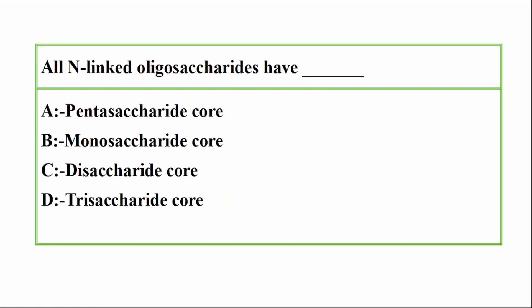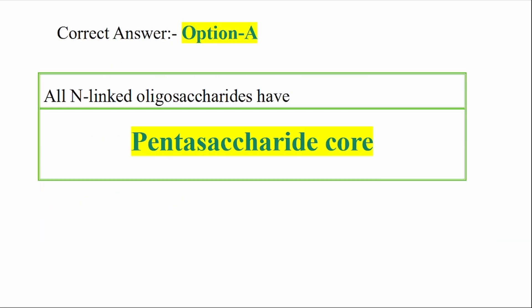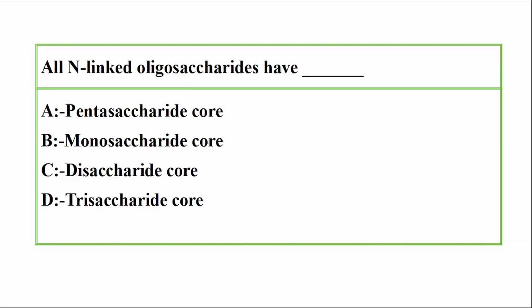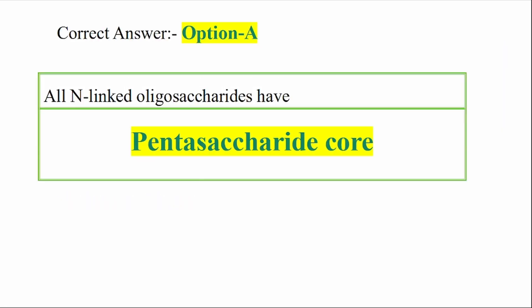Question: All N-linked oligosaccharides have which core? Options: A — Pentasaccharide core, B — Monosaccharide core, C — Disaccharide core, D — Trisaccharide core. Correct answer: Option A — Pentasaccharide core. All N-linked oligosaccharides have a pentasaccharide core.